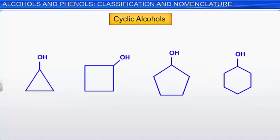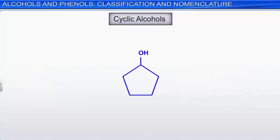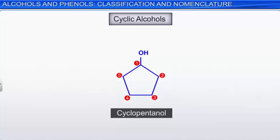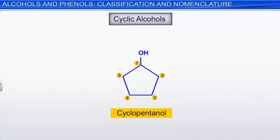Cyclic alcohols are named in a similar manner. Count the number of carbon atoms in the ring, use the prefix cyclo plus the alkane name for the number of carbons, drop the -e and replace it with the suffix -ol. The location of the hydroxyl group on the ring is considered to be carbon-1. For example, a ring with 5 carbon atoms is cyclopentanol.